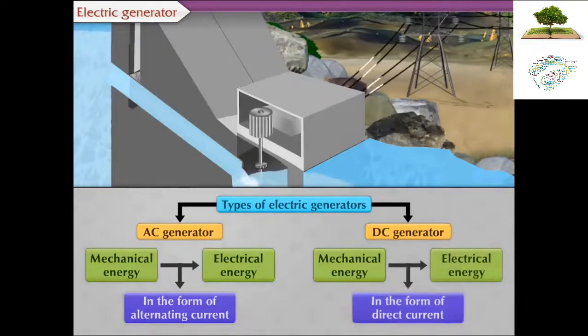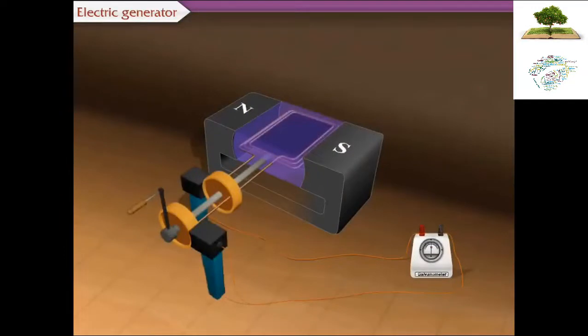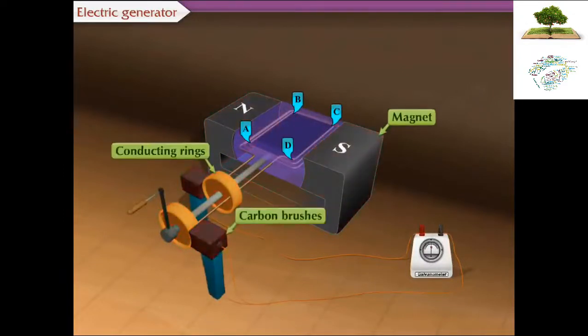Let us first study the construction and working of AC generator. The main components of AC generator are a copper coil ABCD, strong magnet, conducting rings and carbon brushes.